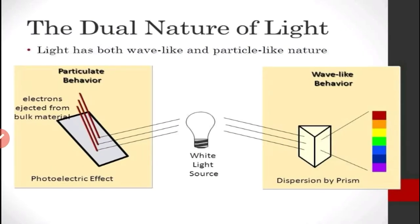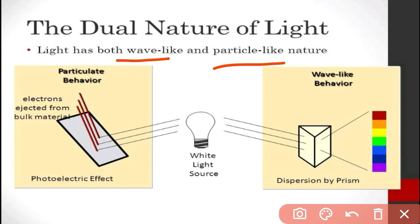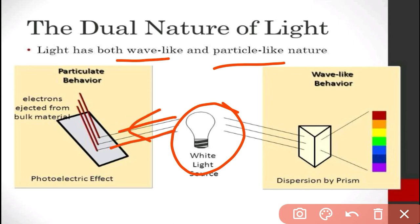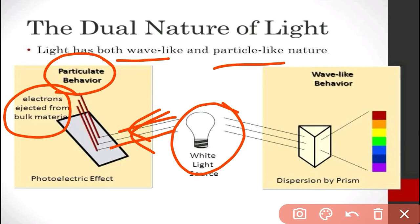This shows the dual nature of light — light has wave-like and particle-like nature. If we take a white light source and make it incident on a metal, electrons are ejected from the metal. Such behavior is called particle behavior. The emission of electrons from a metal means particle behavior — light in the form of h-nu falls on the metal, and per photon, a single electron is emitted.